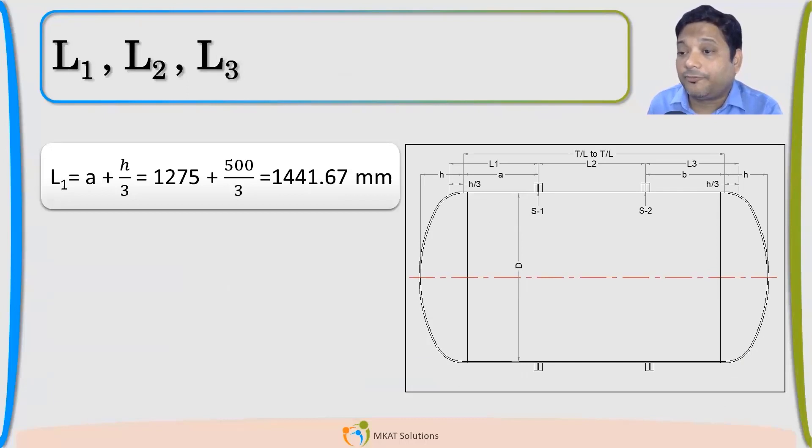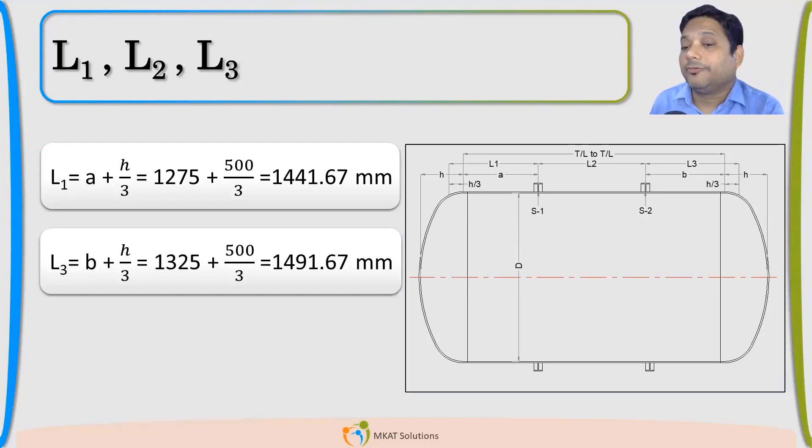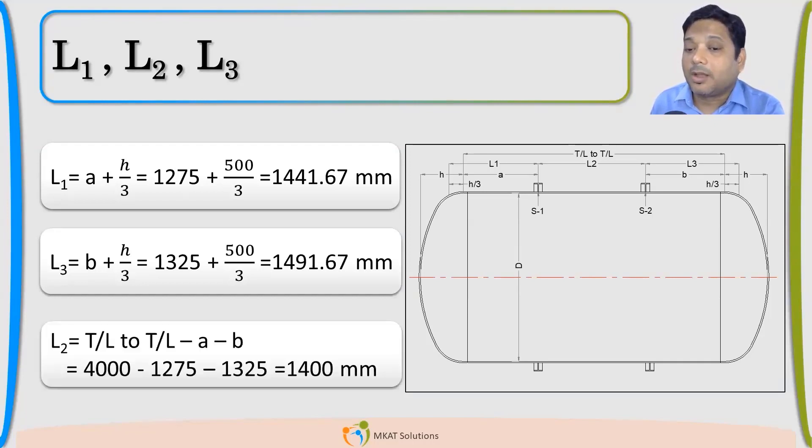Next is finding out that L1, L2 and L3. L1 is what? L1 we talked about. L1 is the distance we already know, A value, which is where that stiffener we are locating because that is the value which we are giving. H by 3 we have already calculated. If we add that, we will get the L1 value. Similarly, L2 and L3 we can find out. Once we have L1, L2, L3.